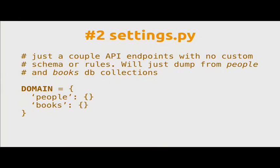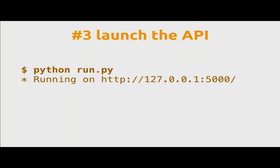The other thing you need is the launch script we just saw, and a settings file where you basically design your API. Like Django and other frameworks, you just have a text file. Here we are giving two endpoints to our API: people and books. We aren't defining anything for these endpoints — we're just saying, I want two endpoints named people and books. Then you just launch the API and it's up and running.